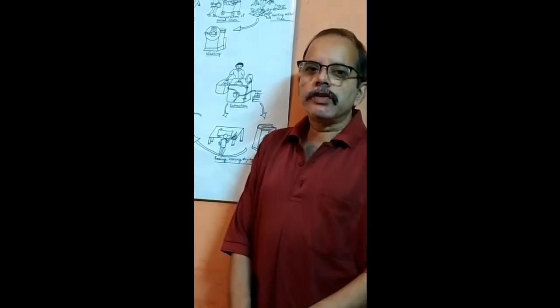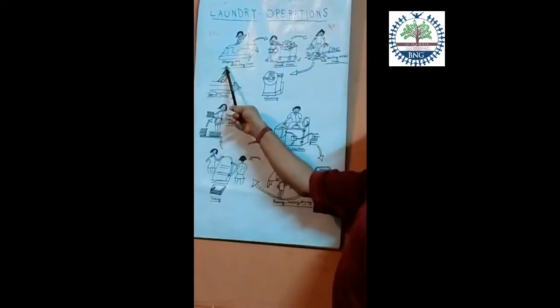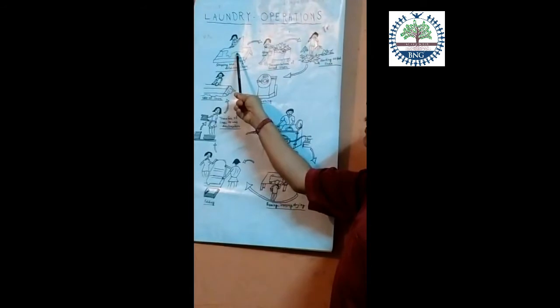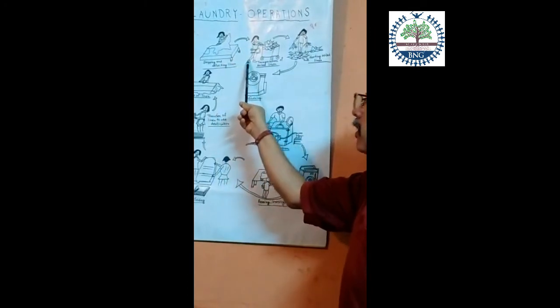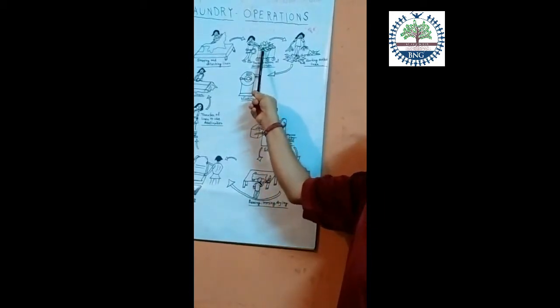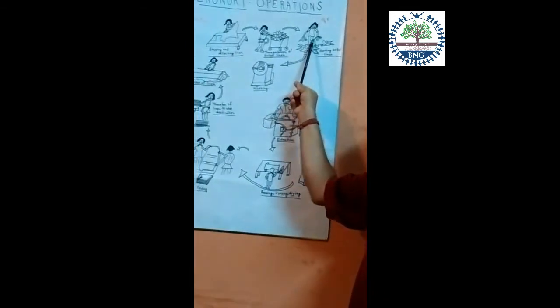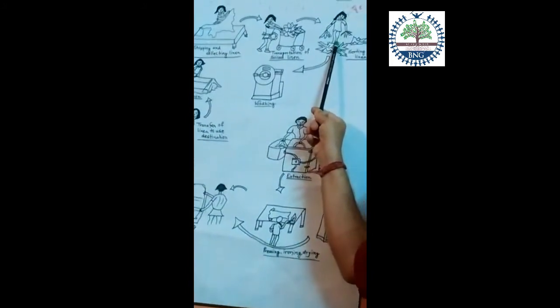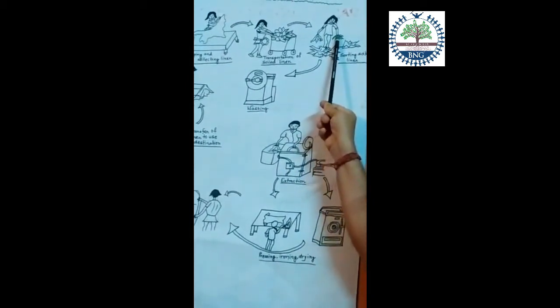Section D: laundry operations. Looking at this figure carefully — first, dirty linens are removed from the rooms, collected into laundry bags, and transferred as soiled linens to the laundry with the help of laundry trolleys. The first work in the laundry is sorting. All linens are collected together and sorted: towels separately, bedsheets separately, pillow cases separately.